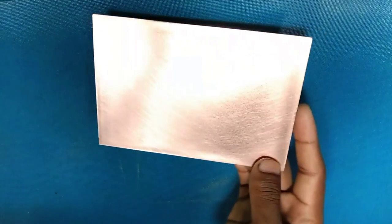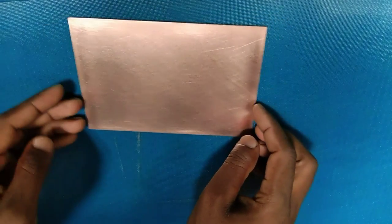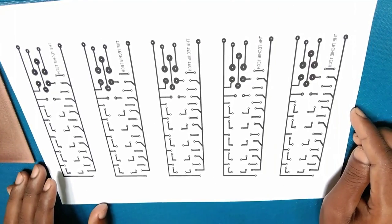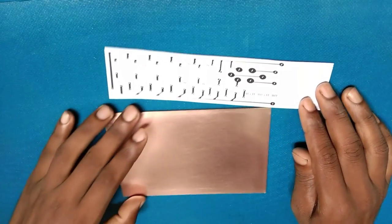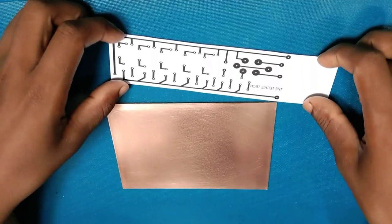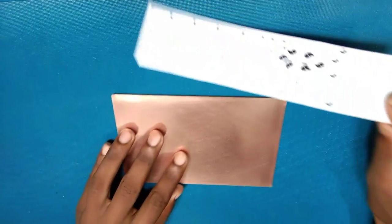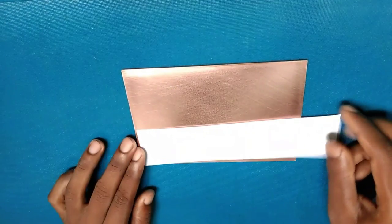After you have sanded the copper surface, wash it with normal soap or detergent. Now take the printed circuit design and cut the desired size which you need to etch. Take the copper clad board and the printed circuit design. Fix the design to the clad board as shown in the video.